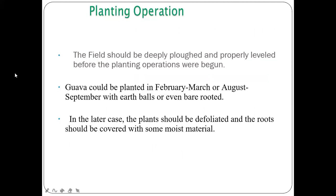Planting of guava should be done in February–March or August–September. Planting can be done with earth balls as well as bare-rooted plants. The field should be properly plowed and leveled before planting.